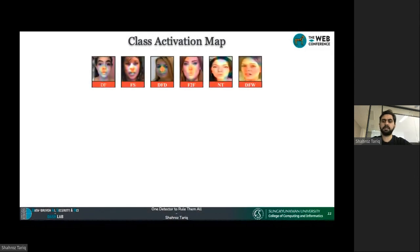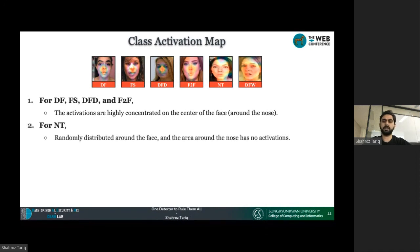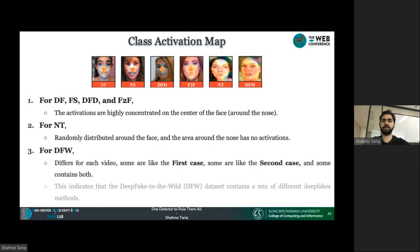Here we provide class activation maps from different types of deepfakes. For DF, FS, DFT, and F2F, the activations are concentrated around the nose region. For NT, the activation is randomly distributed except for the nose region. For the Deepfake in the Wild dataset, it differs for each video — sometimes like the first case, sometimes like the second, and some contain a mix of both. This also indicates that the Deepfake in the Wild dataset includes a mix of different deepfake generation methods.